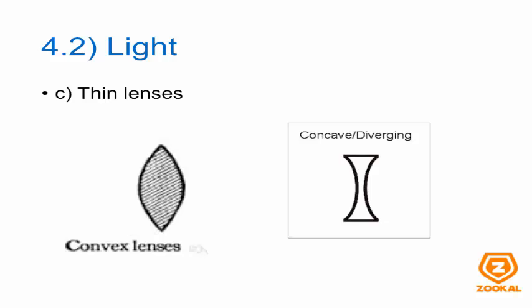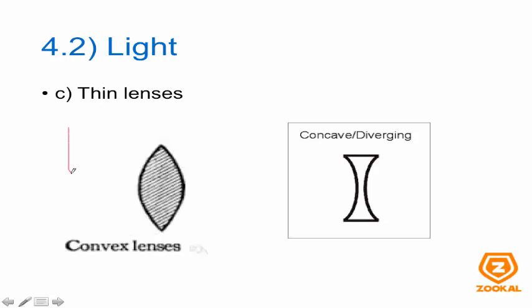Thin lenses. There are two types of lenses you need to know. First is the convex lens, which looks like this. The second is the concave or diverging lens, which looks like this. In drawing any ray diagram, convex lenses are usually represented by one symbol, while concave or diverging lenses are represented by another.